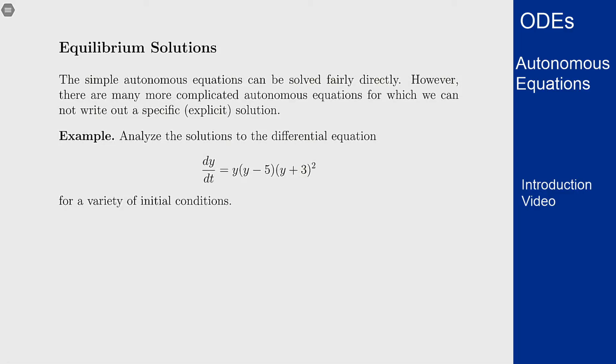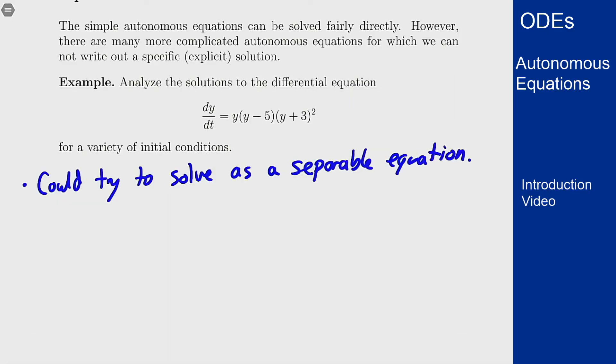Now this is separable so we could try to solve it as a separable equation. However since there's no easy explicit formula for solving a fourth order polynomial there's not really going to be a way to write that as an explicit solution. So what else can we do?